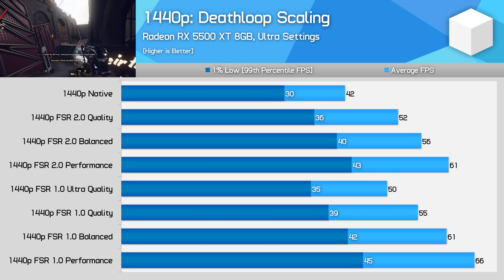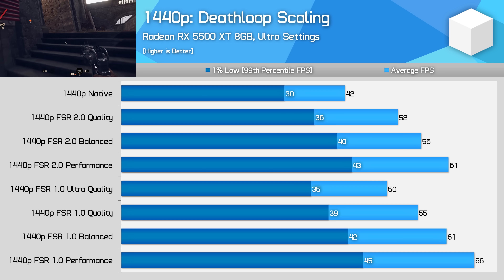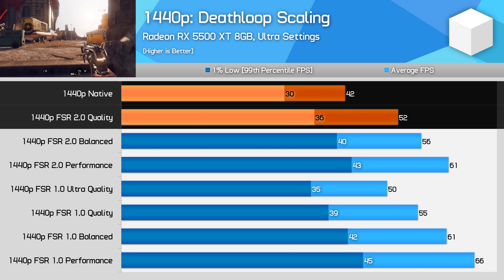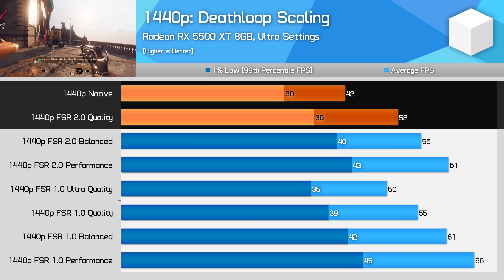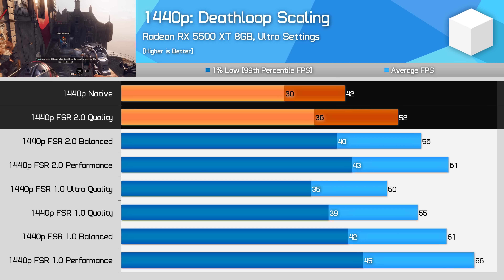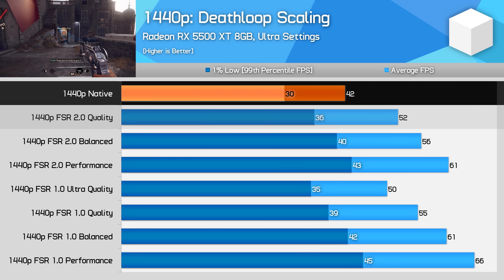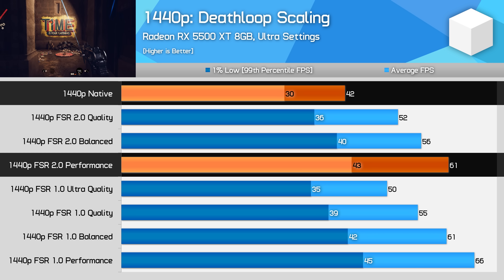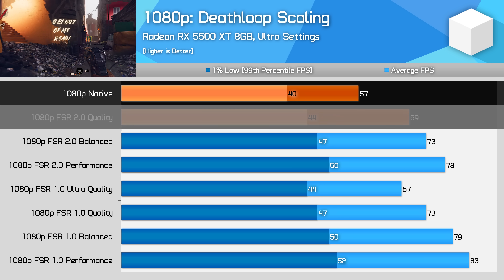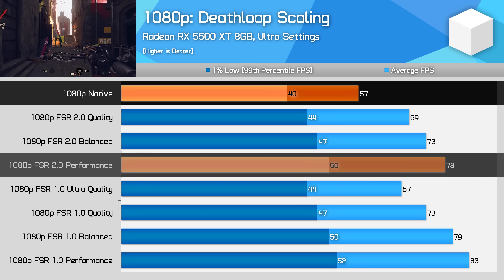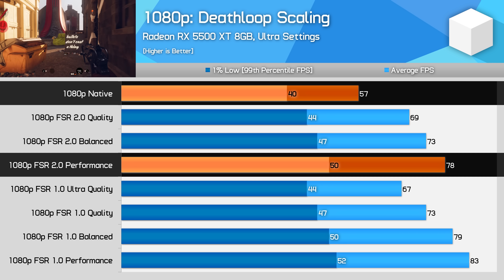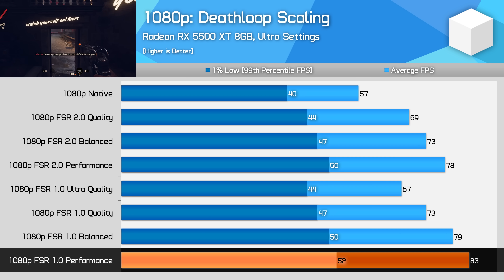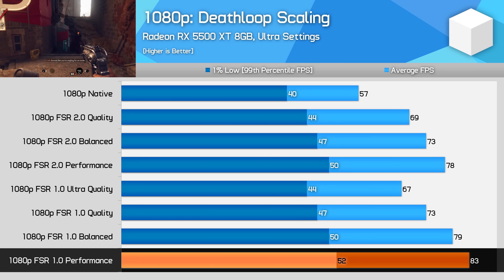Let's look at a first generation RDNA product — the RX 5500 XT 8GB. At 1440p, FSR 2.0 quality mode delivered 24% better performance than native rendering, a much larger uplift than with the RX 570, despite both cards running at approximately the same native FPS. 45% better performance was also possible using the performance mode, and overall this is preferable to FSR 1.0. At 1080p, I also saw respectable gains — 21% for FSR 2.0 quality mode and 37% for FSR 2.0 performance mode — again delivering results preferable to FSR 1.0. The FSR 1.0 performance setting gives a few extra FPS, but the image quality cost isn't worth it.